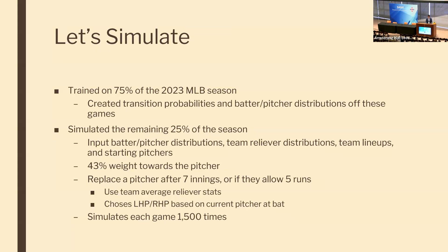The starting pitcher was replaced once they allowed five runs or pitched seven innings. Five runs was chosen because when a pitcher allows five runs early they're typically removed that inning, while a starter allowing four runs typically stays in until at least the next inning. I opted for the more extreme seven innings due to how reliever distributions were calculated, as I had more confidence in starting pitchers.